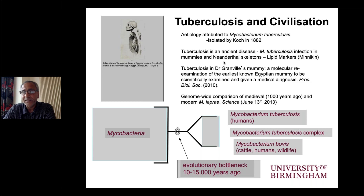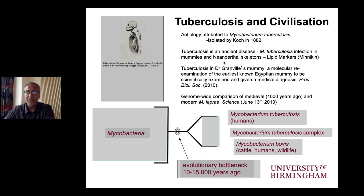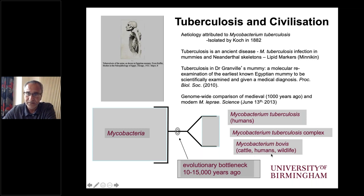We've identified key lipids within skeletal remains from Neanderthal skeletons, and one of our characteristic studies involved Dr. Granville's mummy, an Egyptian mummy that was scientifically examined and shown to have tuberculosis. We've also used key lipid biomarkers to study Mycobacterium leprae, a close cousin of M. tuberculosis, in identifying leprosy. When we think of the M. tuberculosis complex, we have M. tuberculosis infecting humans and M. bovis infecting cattle and other wildlife — these probably originated from a single mycobacteria species around 10 to 15,000 years ago.